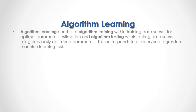Algorithm learning consists of algorithm training within a training data subset for optimal parameter estimation, and algorithm testing within a testing data subset using previously optimized parameters. This corresponds to a supervised regression machine learning task.